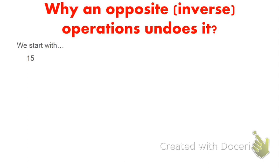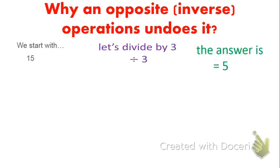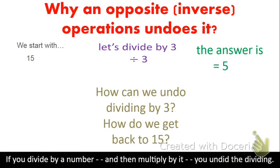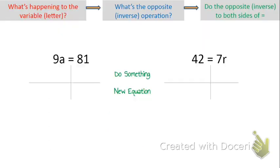What if we start with 15 and divide it by 3? 15 divided by 3 is 5. How do I undo that dividing by 3? How do I make that 5 back to 15? Well, 5 times 3 gives us 15. So if you divide by a number and then multiply by that same number, that undoes the dividing. You can undo dividing by multiplying, and you can undo multiplying by dividing because they are opposites.